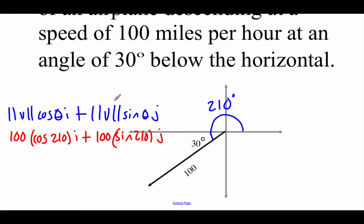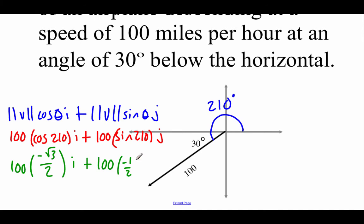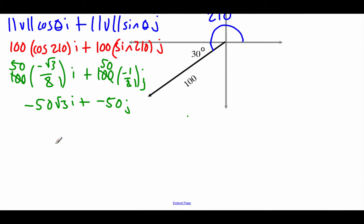From the unit circle, cosine of 210 degrees is negative root 3 over 2, and sine of 210 is negative 1 half. So we get 100 times negative root 3 over 2 times i plus 100 times negative 1 half times j. Simplifying: the 100 and 2 reduce, giving negative 50 root 3 times i plus negative 50 times j. In component form, that's negative 50 root 3 as our x value and negative 50 as our y value.